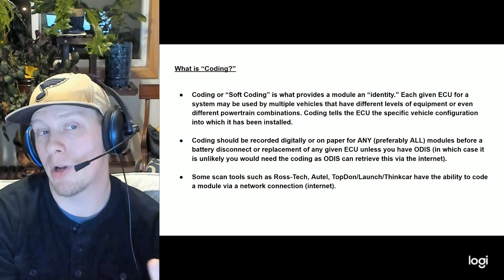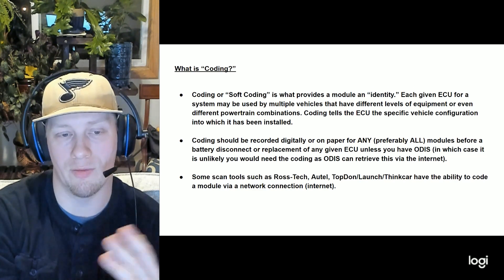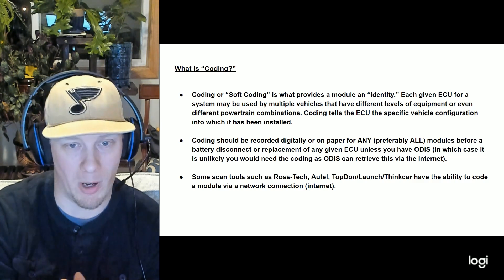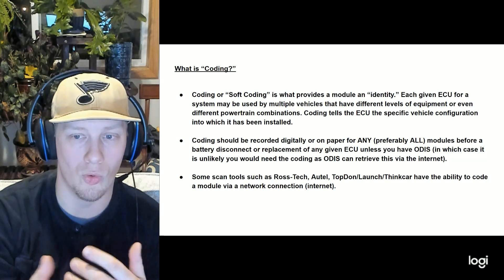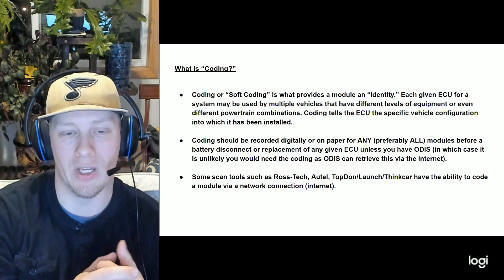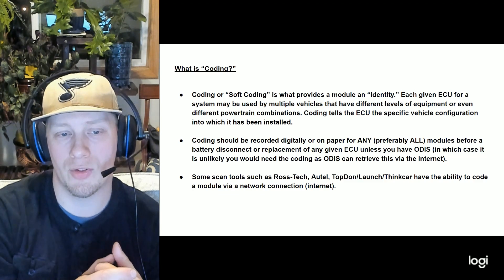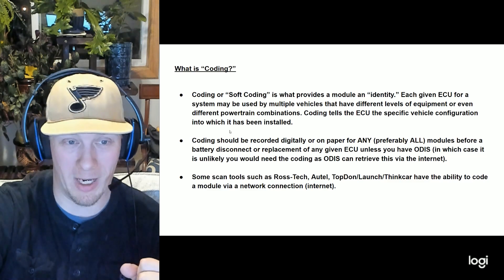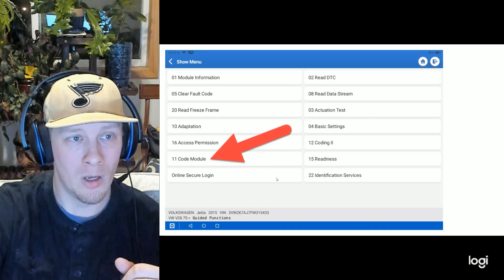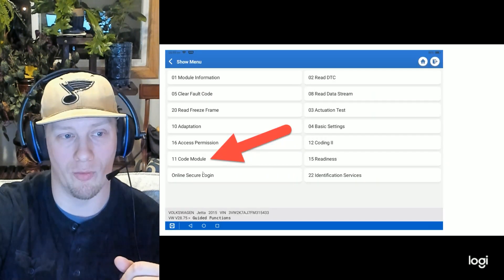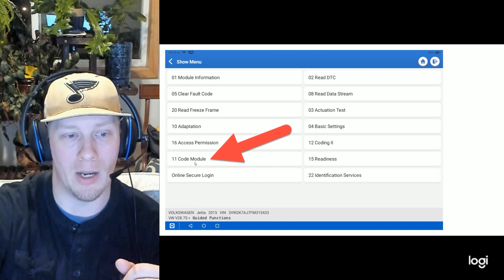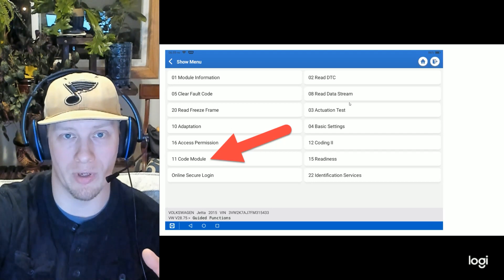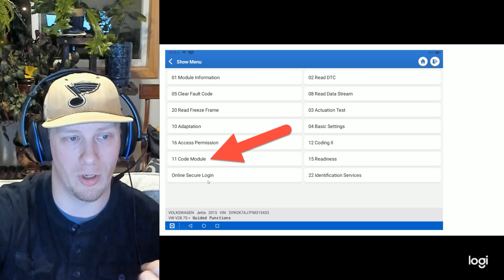Some scan tools also have the ability to retrieve coding via the internet. The new Top-Down Phoenix Smart has this capability, as do most of the Launch and Think Tool newest models, and Autel definitely has it on many of their scan tools. So even if you make a mistake and lose coding, you may be able to get bailed out. That's where you'll find the coding module option once you're inside the control unit menu.